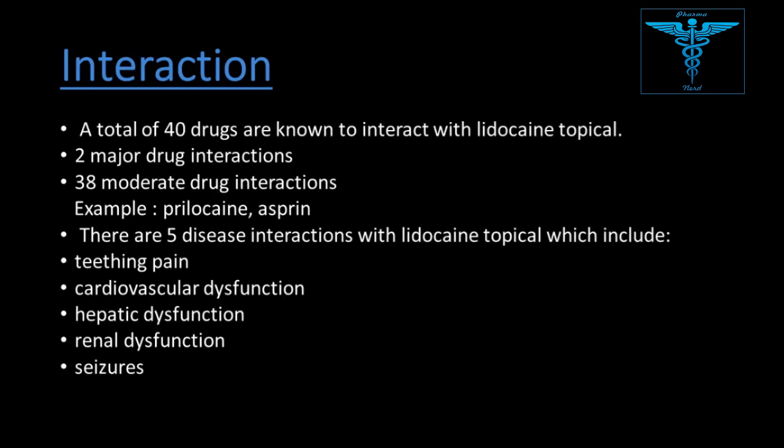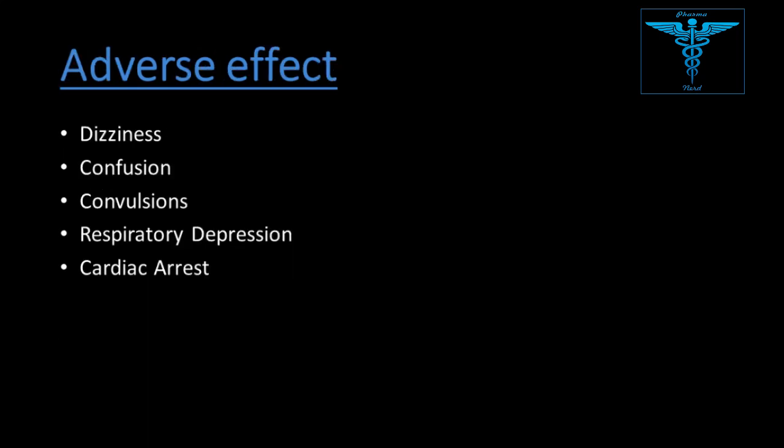Interactions: 40 drug interactions total — 2 major and 38 moderate. Aspirin and prilocaine are examples of drug interactions. Five disease interactions, including teething pain, cardiovascular dysfunction, hepatic dysfunction, renal dysfunction, and seizures. Adverse effects include dizziness, confusion, convulsions, respiratory depression, and cardiac arrest.